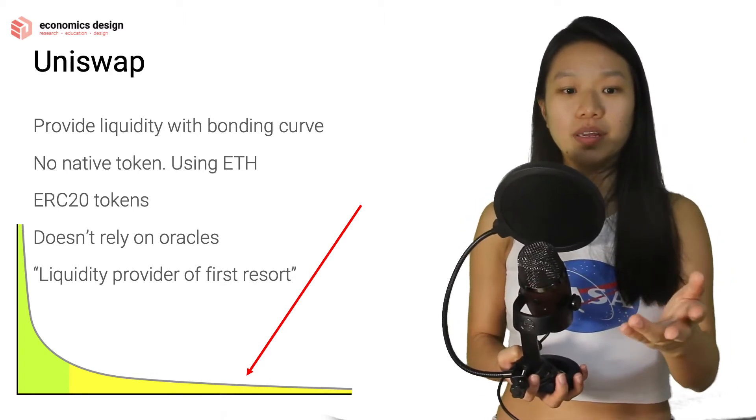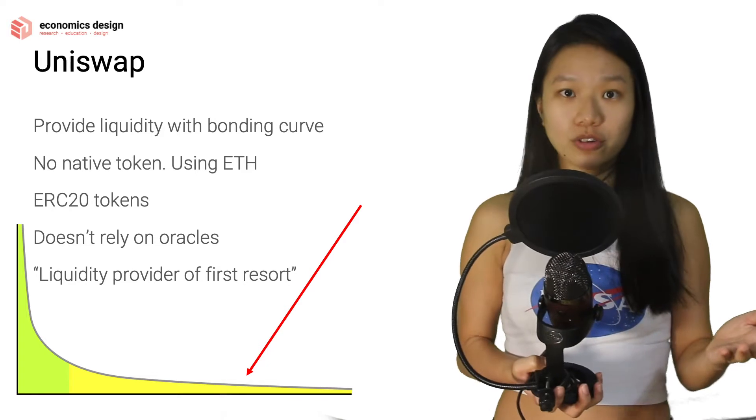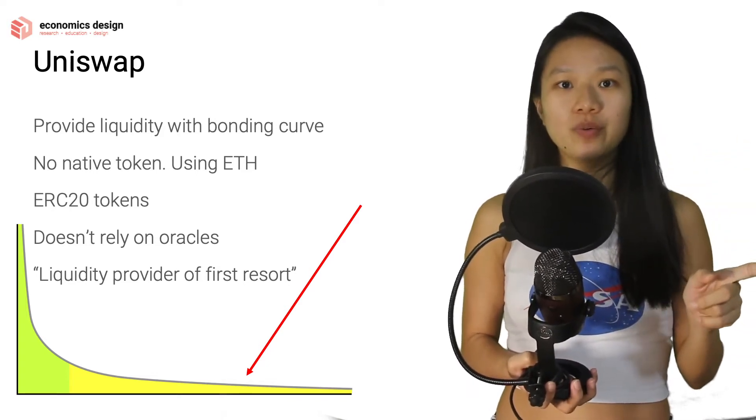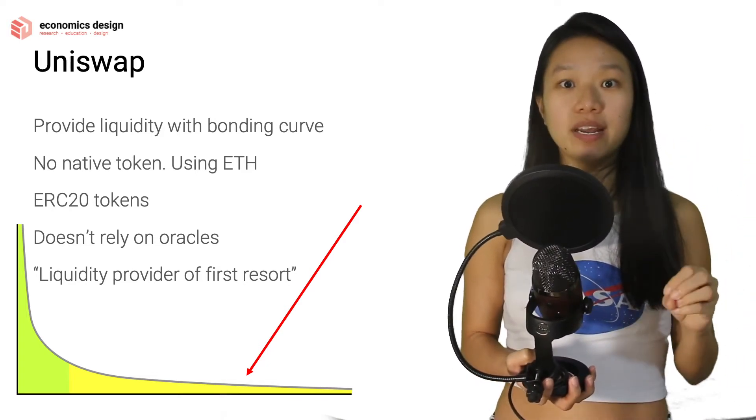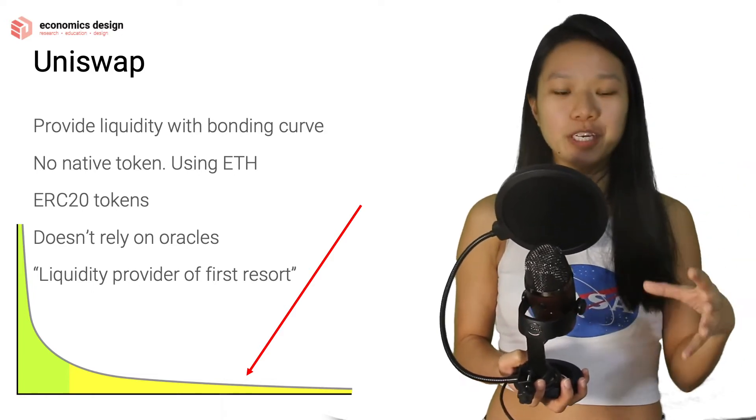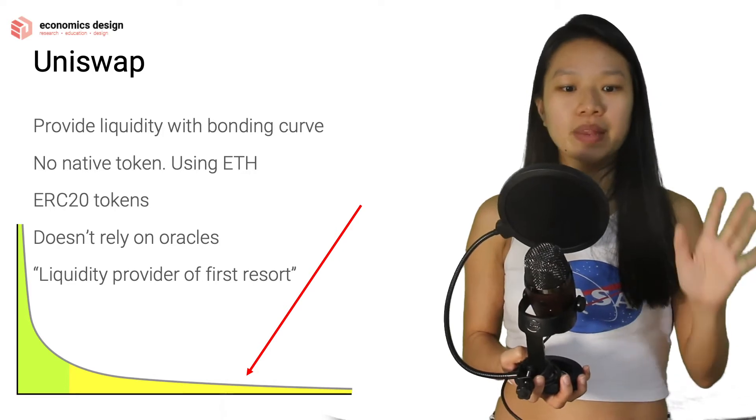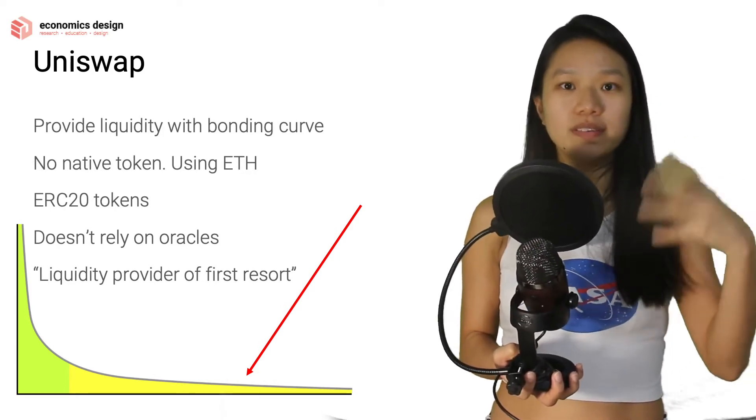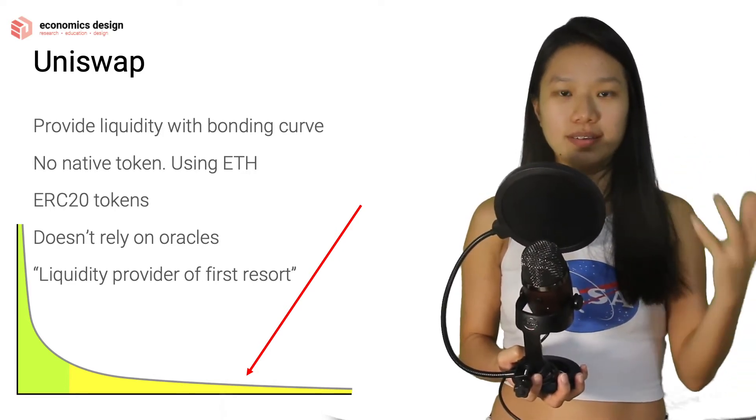The fun thing about Uniswap is that it doesn't have oracles. In Bancor's V2 model, they are adding Chainlink's oracles into that to be providing the information as price news feed. With Uniswap, there is none. And with all these different DEXs, these decentralized exchanges.